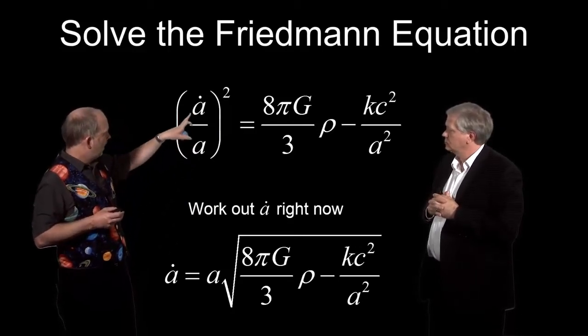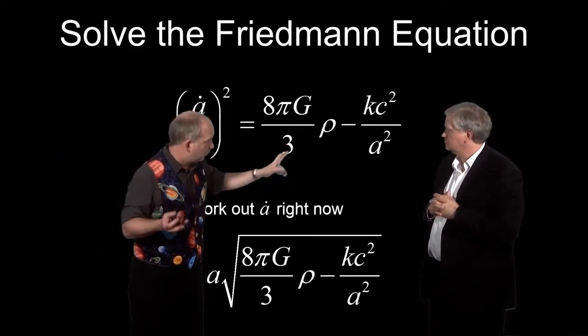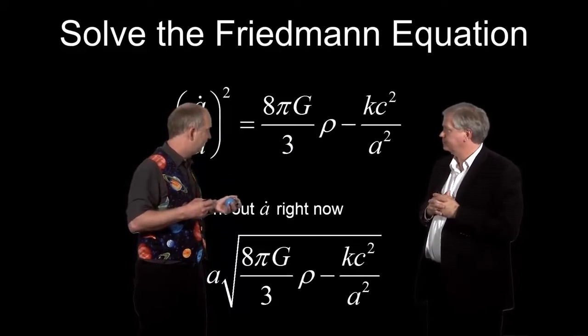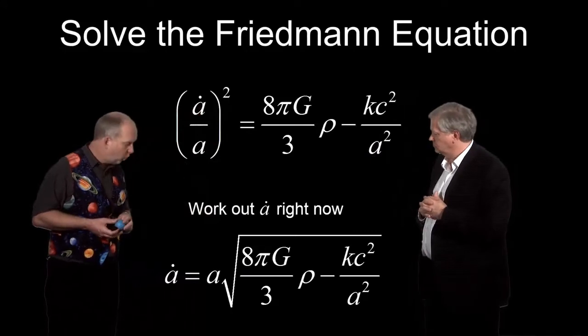And we know a dot right now from Hubble's constant. And let's assume we know what the density is now. At least we'll assume a density now. Some fraction of the critical density, maybe more or less than the critical density. So then we can go forward. We know how things change back in time, so no problem. So all our ingredients are there.